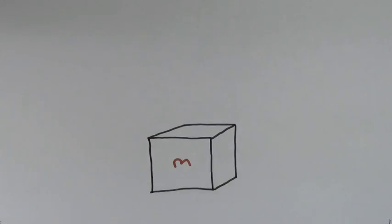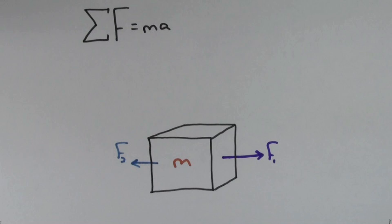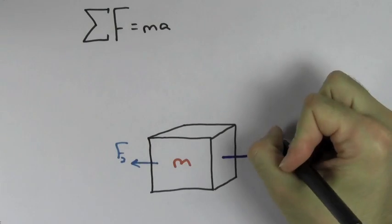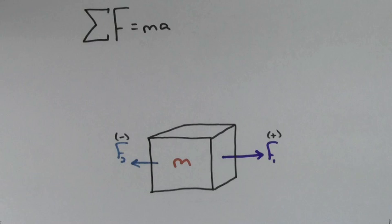Say you have a box of mass M with a force F1 pointing to the right and a force F2 pointing to the left. We need to include both F1 and F2 into the left-hand side of the equation, but we have to be careful whether we should include them with a positive sign or a negative sign. F1 points to the right, so we consider it a positive force since it points in the positive direction. F2 points to the left, so we consider it a negative force because it points in the negative direction.